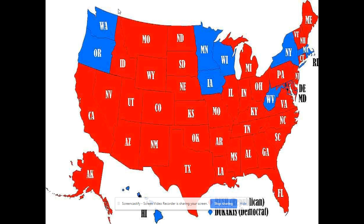H.W. Bush will encounter a very formidable independent challenger by the name of Ross Perot, who's going to take Republican votes from H.W. Bush and give the election to Bill Clinton in the election of 1992.